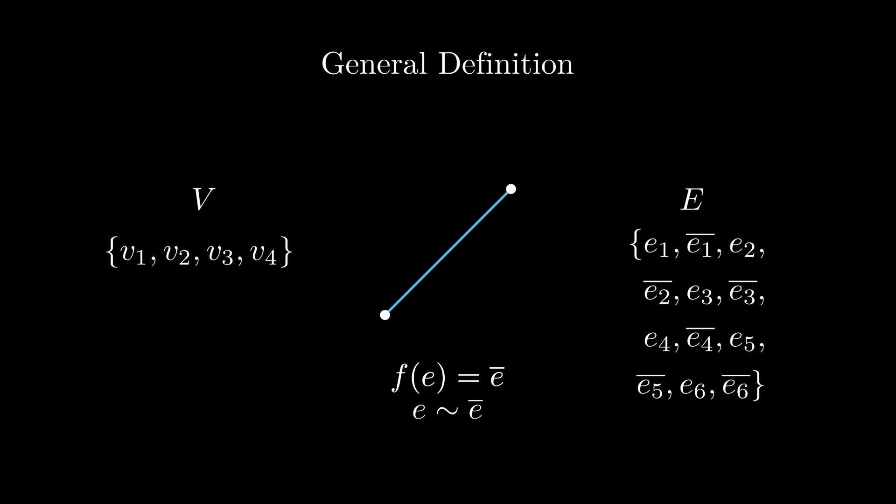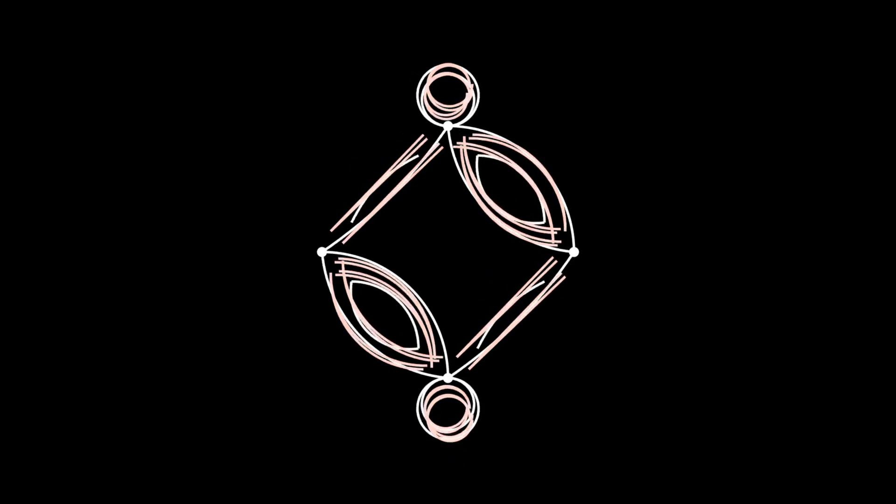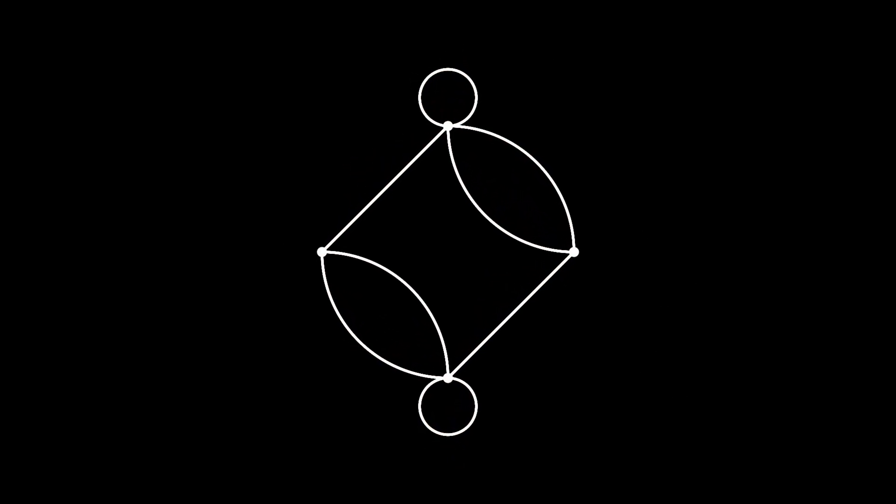If we repeat this process for all of the edges in our original directed graph, we end up with an undirected graph. I find this definition to be such an elegant solution to our problem. It is also kind of intuitively how we already think of an edge.